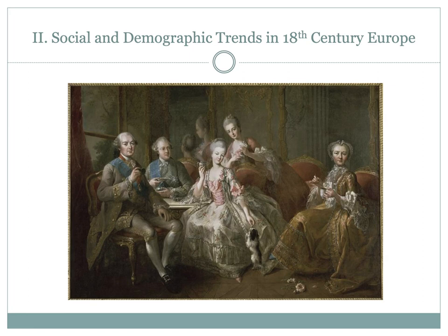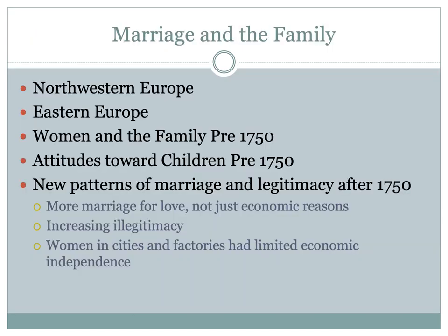That brings us to part two of the lecture: the social and demographic trends in 18th century Europe. We'll look more closely at family structure for different social classes. In regards to marriage and the family, this is going to be different between Northwestern Europe and Eastern Europe. In Northwestern Europe, having three-generation families was pretty rare by 1700. This was due to higher mortality rates and later marriages — many people did not know their grandparents.